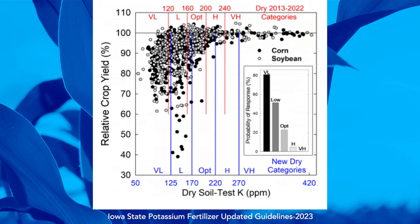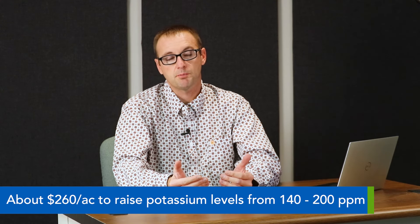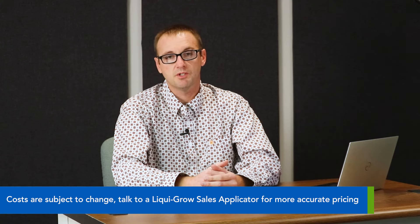But then reality sets in. Let's say hypothetically you were at 140 parts per million, which many fields are. Just how much potassium would it take to get to only 200 parts per million? It would take approximately 540 pounds of actual potassium, or 756 pounds of potassium chloride or muriate of potash. While LiquorGrow would love to sell you all that potassium, and in some cases it might make sense, in non-secure lease situations that definitely does not make sense. To go from 140 to 200 parts per million would cost you approximately $260 per acre, not even accounting for crop removal.